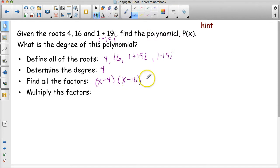There's two factors. Another factor is going to be x minus 1 plus 19i. Well, that really becomes x minus 1 minus 19i. And then the other factor is x minus 1 plus 19i, which is x minus 1 plus 19i. In other words, if I have x minus 1 plus 19i, I have to distribute the 1. This becomes x minus 1 minus 19i.